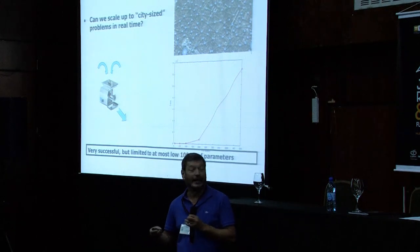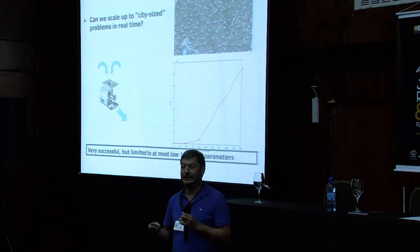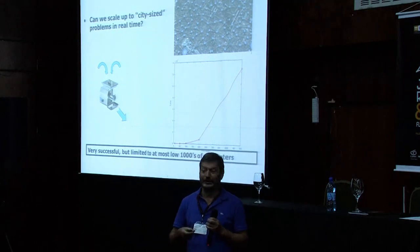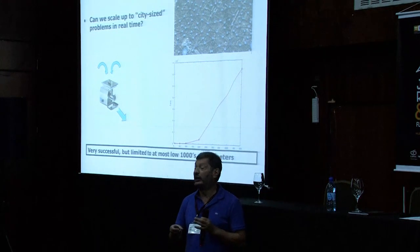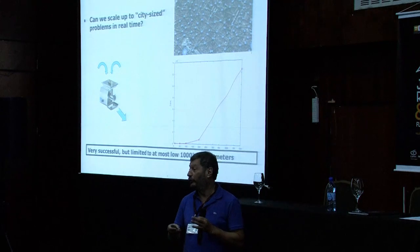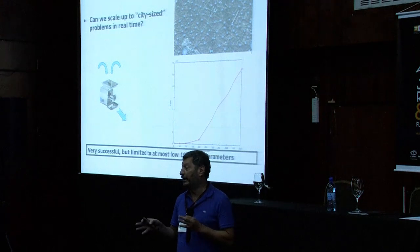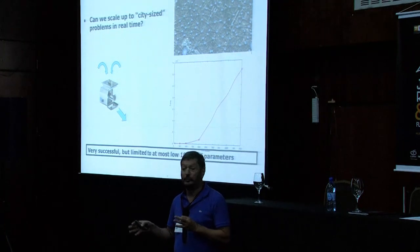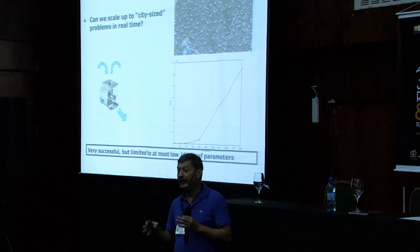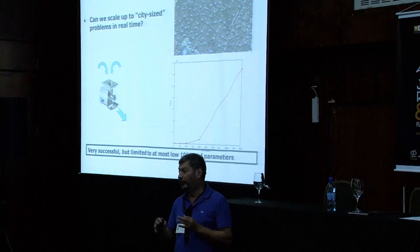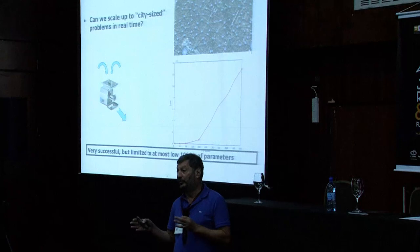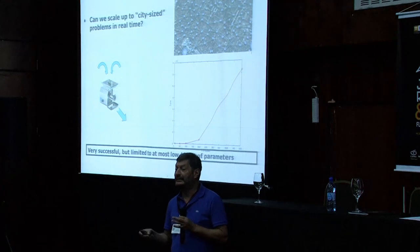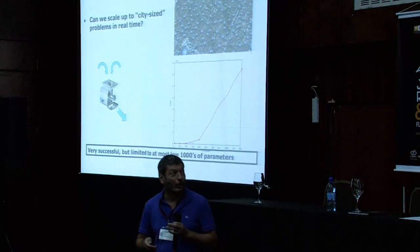If you have an n-order system, at the end of the day, you have something that scales as n to the power 6. The point is that we're very successful solving problems that have thousands of parameters. On the other hand, we're pushing the limit. If you ever try to solve an LMI that involves a matrix that's 1,000 by 1,000, be prepared to wait a long time, unless you come up with your own first-order methods, ADMM-type things — and that still is going to take a long time.